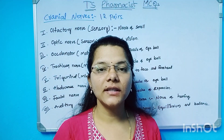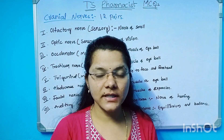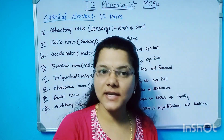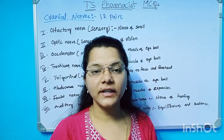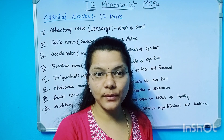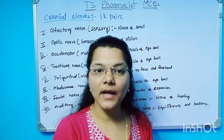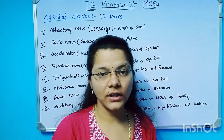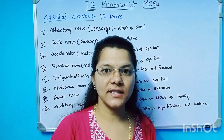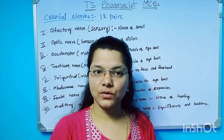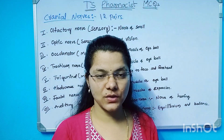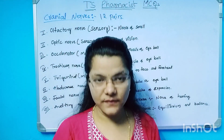The sensory nerve carries signals to the brain. The motor nerve carries stimulation from the brain. The mixed nerve has both sensory and motor qualities — so sensory and motor together make a mixed nerve.